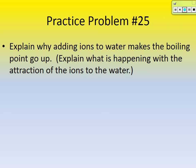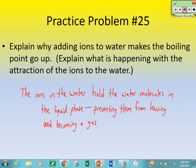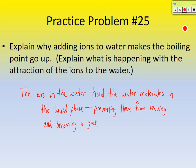Practice problem 25: explain why adding ions to water makes the boiling point go up — explain what is happening with the attraction of the ions to the water. Here's the answer: the ions in the water hold the water molecules in the liquid phase, preventing them from leaving and becoming a gas. The attraction between the ions and the water molecules holds them in the liquid phase a little bit longer.